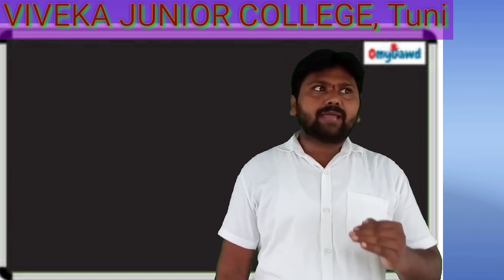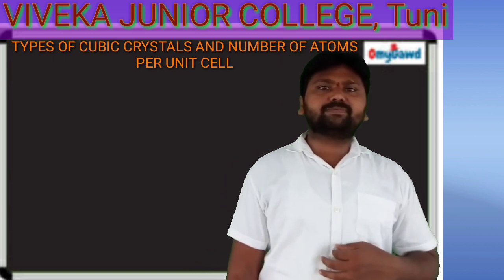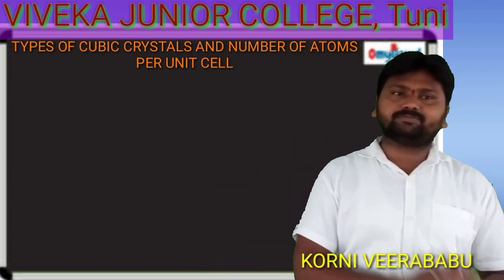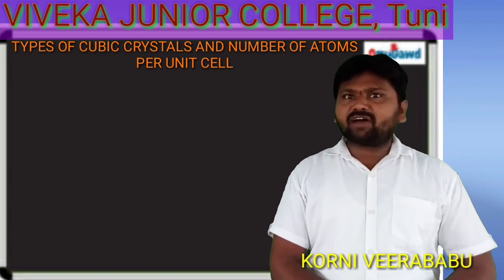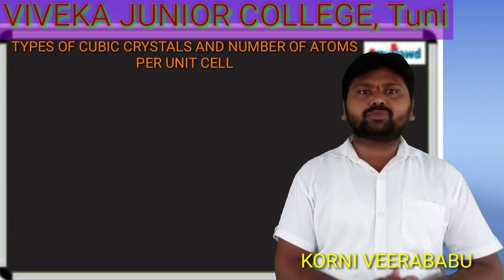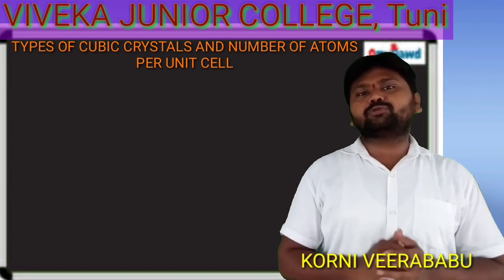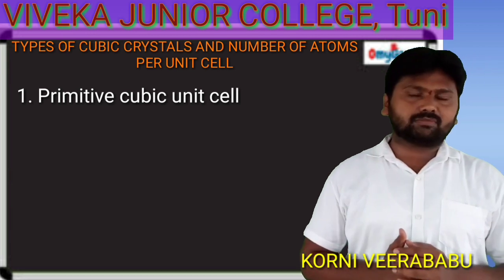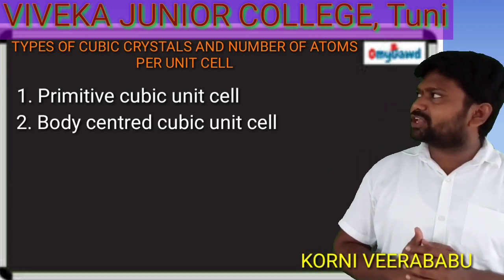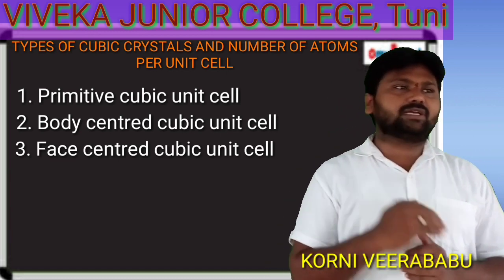In this lecture, we will cover the types of cubic crystals and the number of atoms per unit cell. There are three types of cubic unit cells: simple or primitive cubic, body-centred cubic, and face-centred cubic.